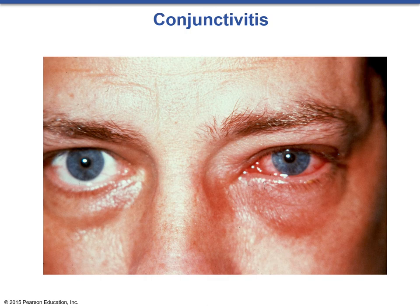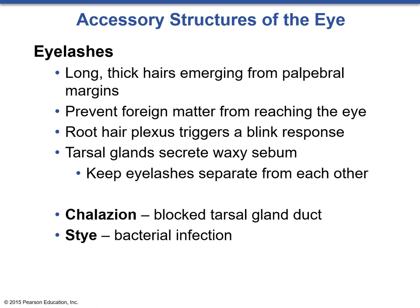Eyelashes are long thick hairs that emerge from the palpable margins. Their function is to prevent foreign matter such as dust or insects from reaching the eye. The root hair plexus triggers the blink response when stimulated. Deep inside that hair plexus is a tarsal gland that secretes a waxy sebum, which helps to keep the eyelashes separate from each other. If a tarsal gland becomes blocked, a buildup of secretions can cause a swelling called a chalazion. This is quite different from a stye, which is a swollen pimple on the eyelid caused by a bacterial infection.